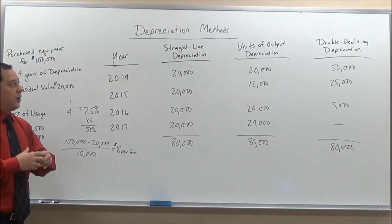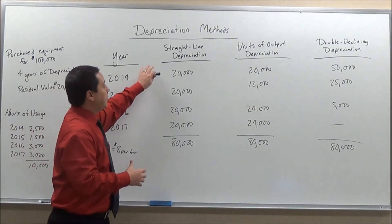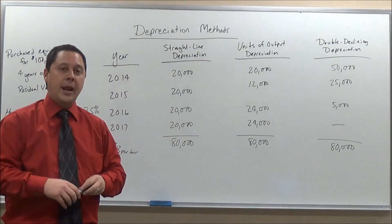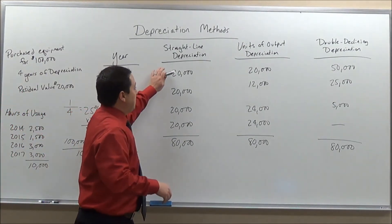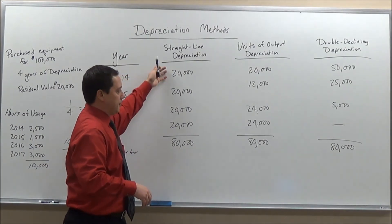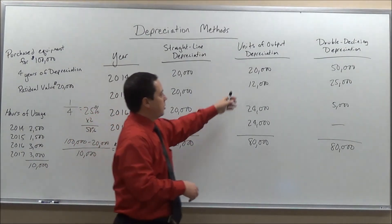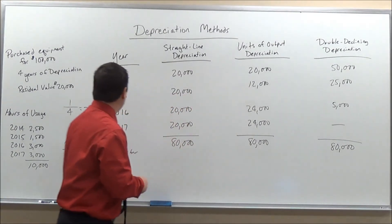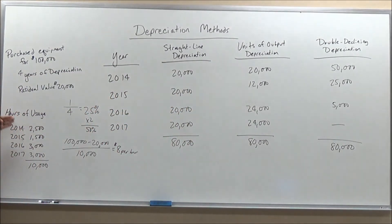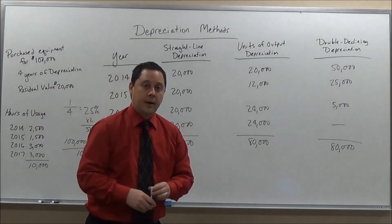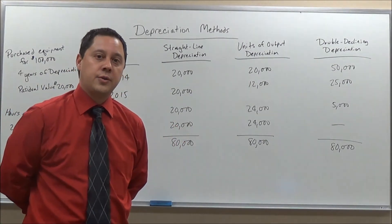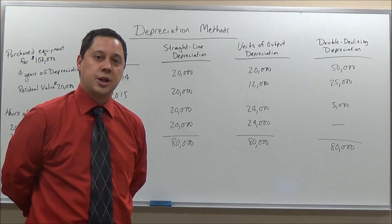These are the depreciation methods that can be used. The straight line method is very simple and consistent. Units of output depreciates based on the usage each year. And double declining balance depreciation is higher in the early years and slows down at the end. I'm Dr. Fred Sutton — hope you've enjoyed this video on depreciation methods. Thank you and take care.